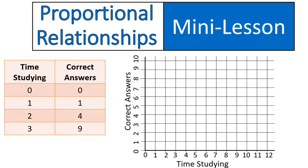This one starts with 0, 0, so that's good. It's time studying for our x values and correct answers that you get on the test. It starts at 0, 0. If you study for 0 hours, apparently you'll get 0 correct answers. So we're going to put a point there.